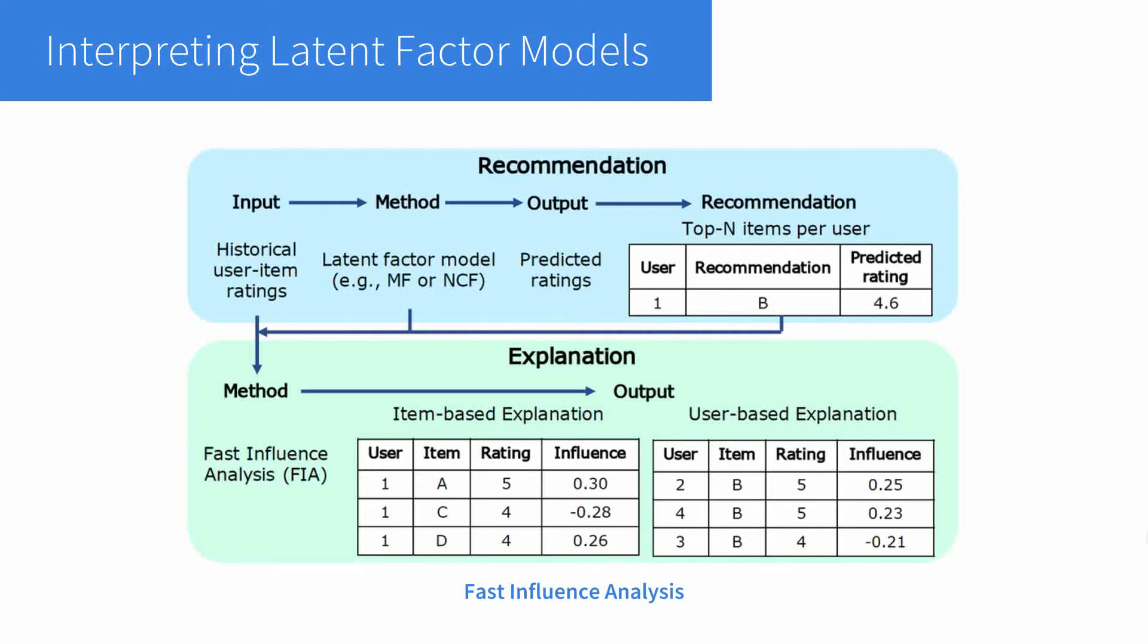Suppose we are given the parameters of the model, we aim to answer, how does each historical rating of user 1 affect the predicted rating, which is dubbed as the item-based explanation?